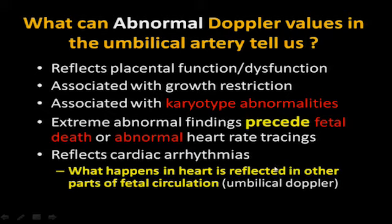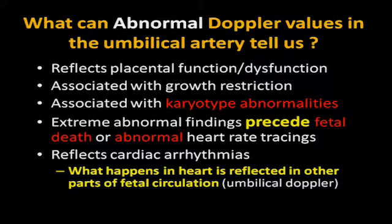What can abnormal Doppler values in the umbilical artery tell us? It reflects placental function or dysfunction. It can be seen in association with growth restriction, aneuploidy, and karyotype abnormalities. Extremely abnormal findings can precede fetal death or abnormal heart rate tracing — even before the baby shows abnormalities in the heart rate tracing from your NST, the Doppler can let us know the baby is getting into trouble. It also reflects cardiac arrhythmias: what's happening in the heart is reflected in the fetal circulation.